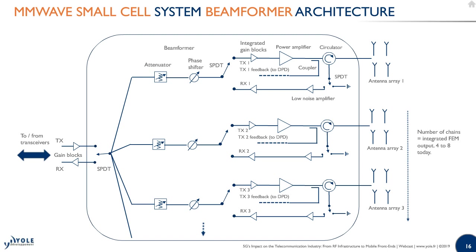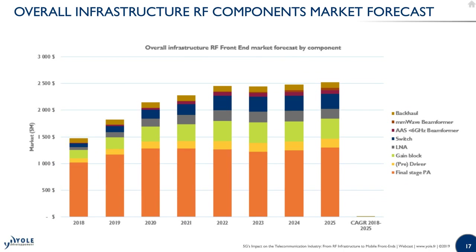From a market perspective, we tracked all different components and estimated the market evolution linked to 5G. We expect and already see growth in the RF component market for telecom infrastructure — growth that should slow past 2022. This growth doesn't come from an increased number of antenna systems deployed; we expect the same number of systems but a higher bill of materials for active antenna systems, as they need beamformers, switches, more gain blocks, and a higher number of LNAs.